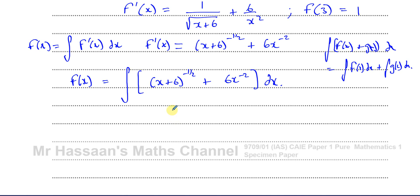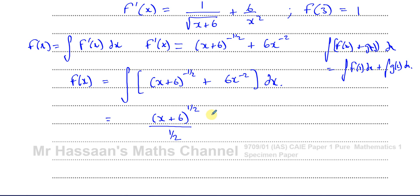Integration is the inverse of differentiation. When you integrate, the first thing you do is add one to the power. So (x+6) to the negative a half becomes (x+6) to the power of positive a half, then divide by the new power. The differential of what's inside is just 1, so we don't need to worry about the reverse chain rule here. For the second term, 6x to the minus two becomes 6x to the power of minus one divided by minus one. And since this is an indefinite integral, we must write plus c.